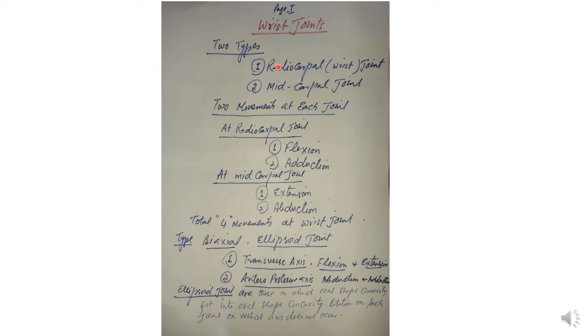This joint is composed of two components. Number one is the radiocarpal joint, which is the wrist joint. The radiocarpal joint is between the inferior surface of the radius and the proximal row of the carpal bones. The proximal row of the carpal bones is composed of scaphoid, lunate, triquetrum, and pisiform.